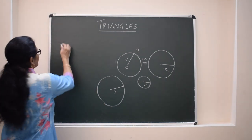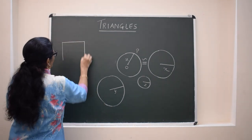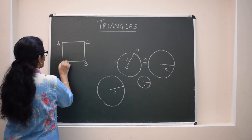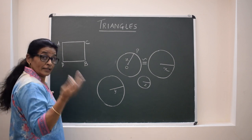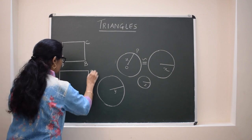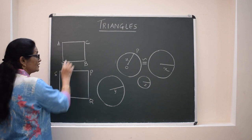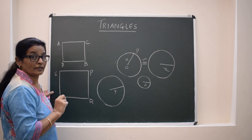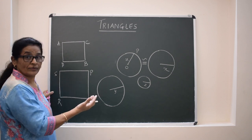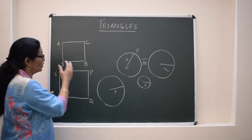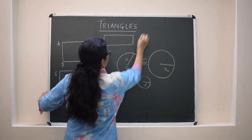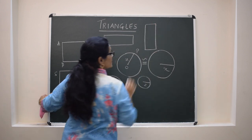Now if we take another figure, like ABCD is a square and another square bigger in size — since these two are squares, they are similar, because their sides are not equal. So we can say in general: all the circles are similar, all the squares are similar, and all the rectangles are similar.